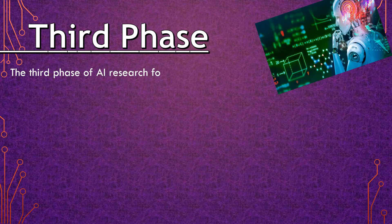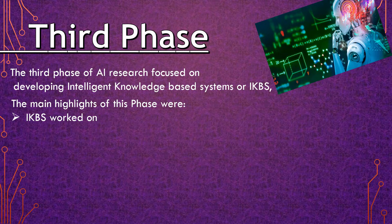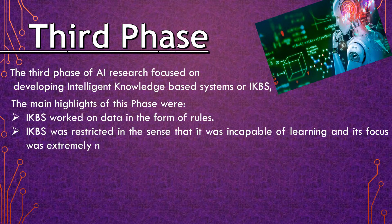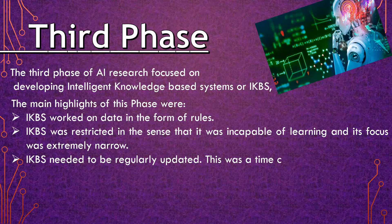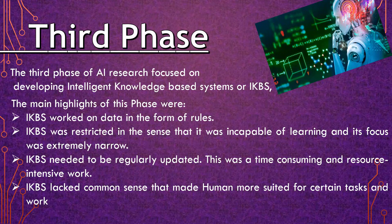The third phase of AI research focused on developing Intelligent Knowledge-Based Systems, or IKBS. The main highlights of this phase were: IKBS worked on data in the form of rules; IKBS was restricted in that it was incapable of learning and its focus was extremely narrow; IKBS needed to be regularly updated, which was time-consuming and resource-intensive; and IKBS lacked common sense, making humans more suited for certain tasks.